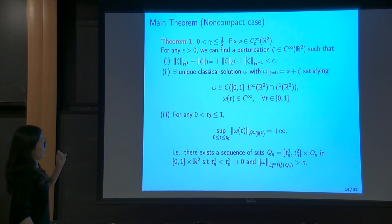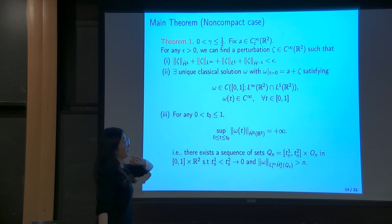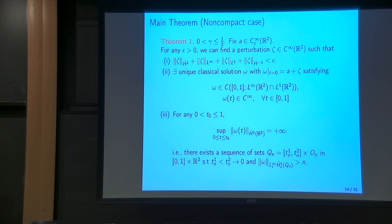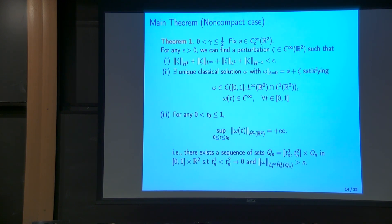To identify the perturbed solution we need its unique existence in some space, given in the second condition. In what sense is this infinite norm achieved? We can find a sequence of sets Q_n of the following form — let me draw a picture. On the time-x axis, Q_n consists of strips that look like Q₂, Q₃, and so on. On each Q_n, the perturbed solution's L^∞-in-time homogeneous Sobolev norm Ḣ¹_x is greater than n. Then if we choose an arbitrary time t₀, on the corresponding set we get infinite norm in the critical space.